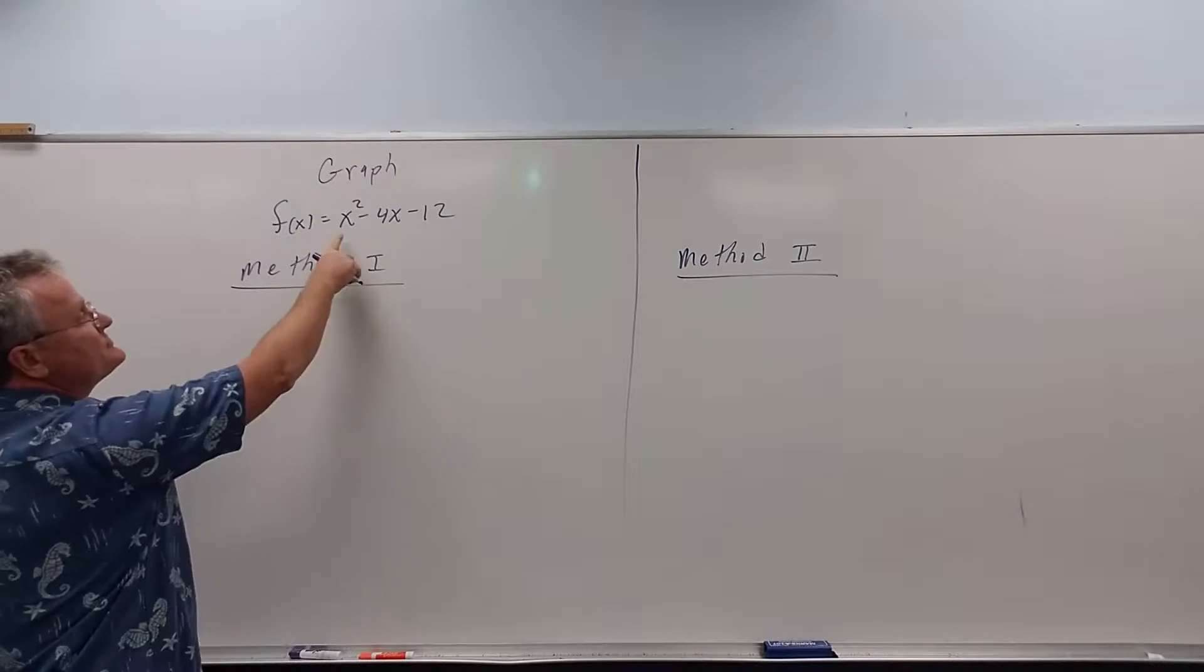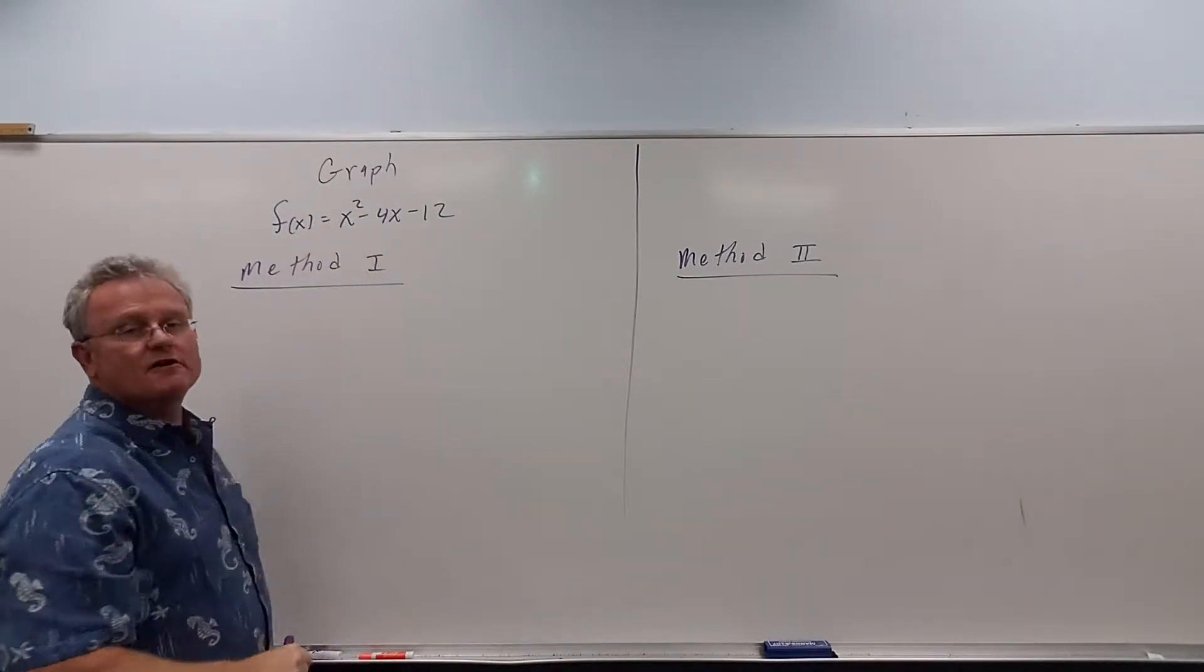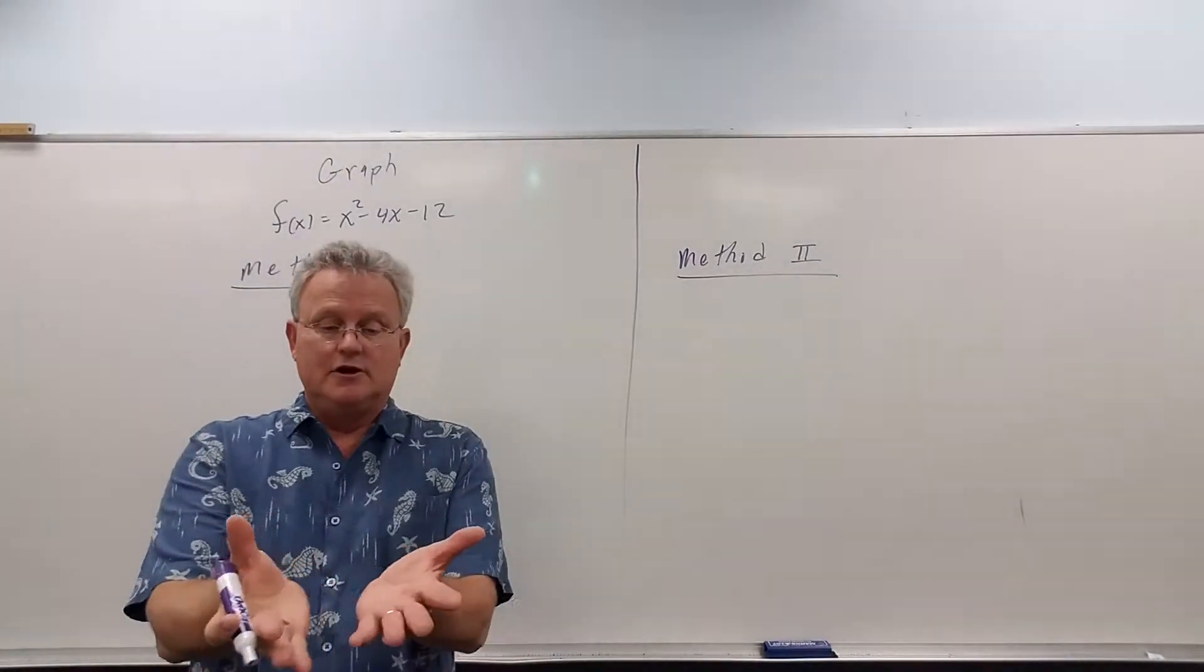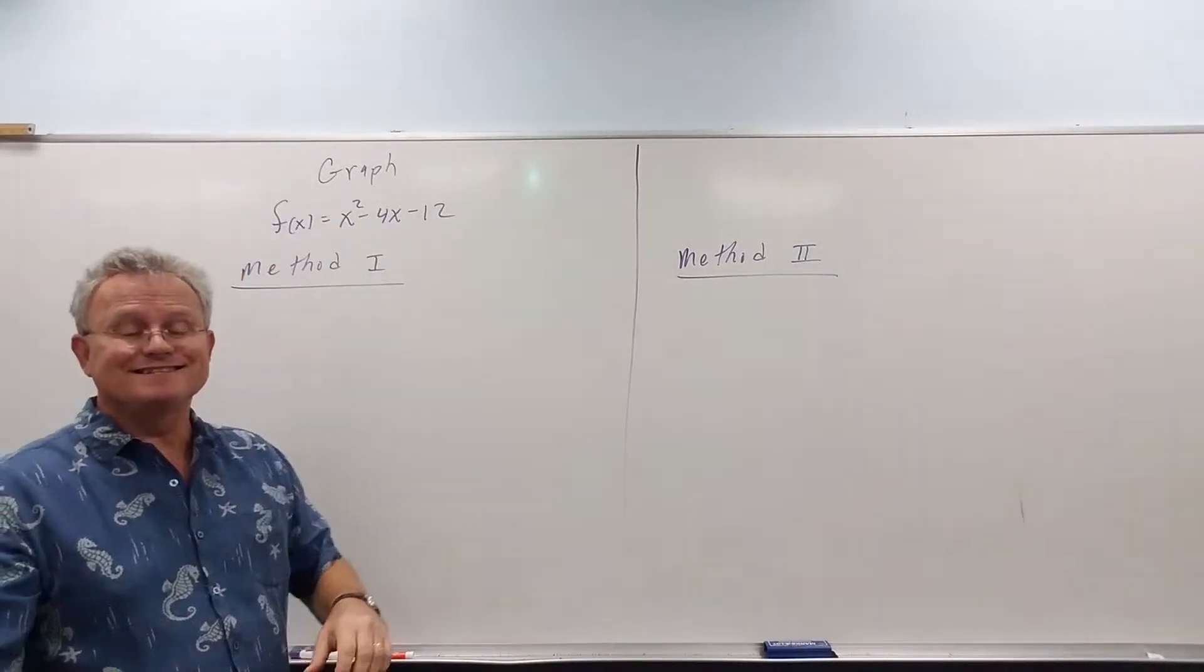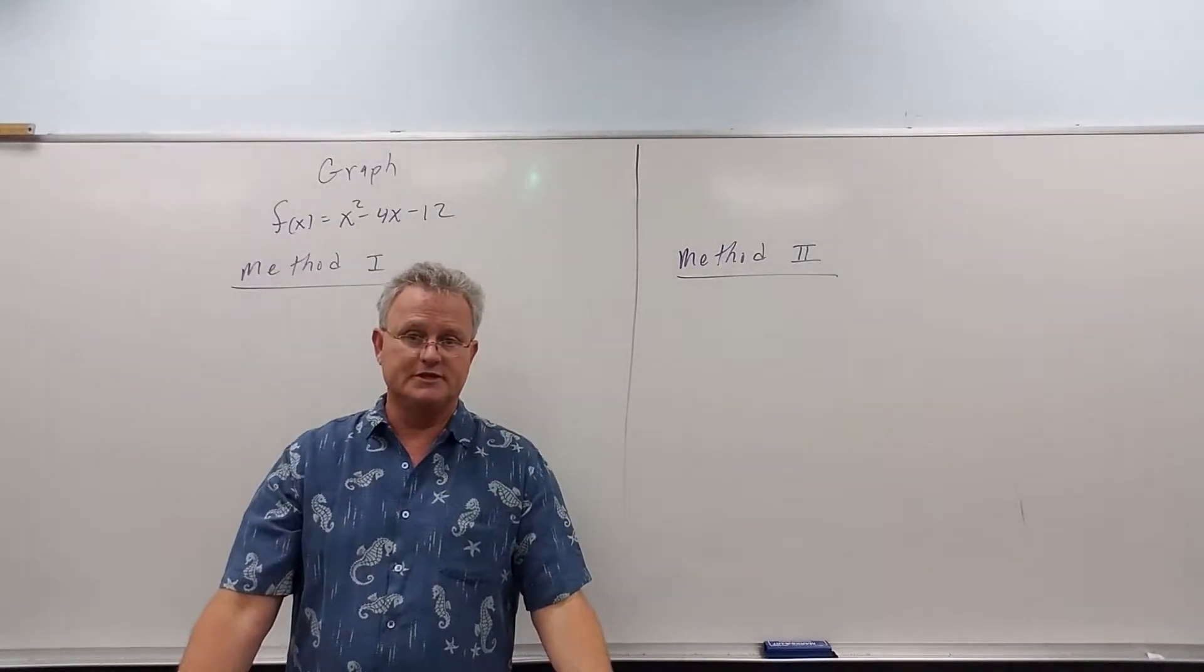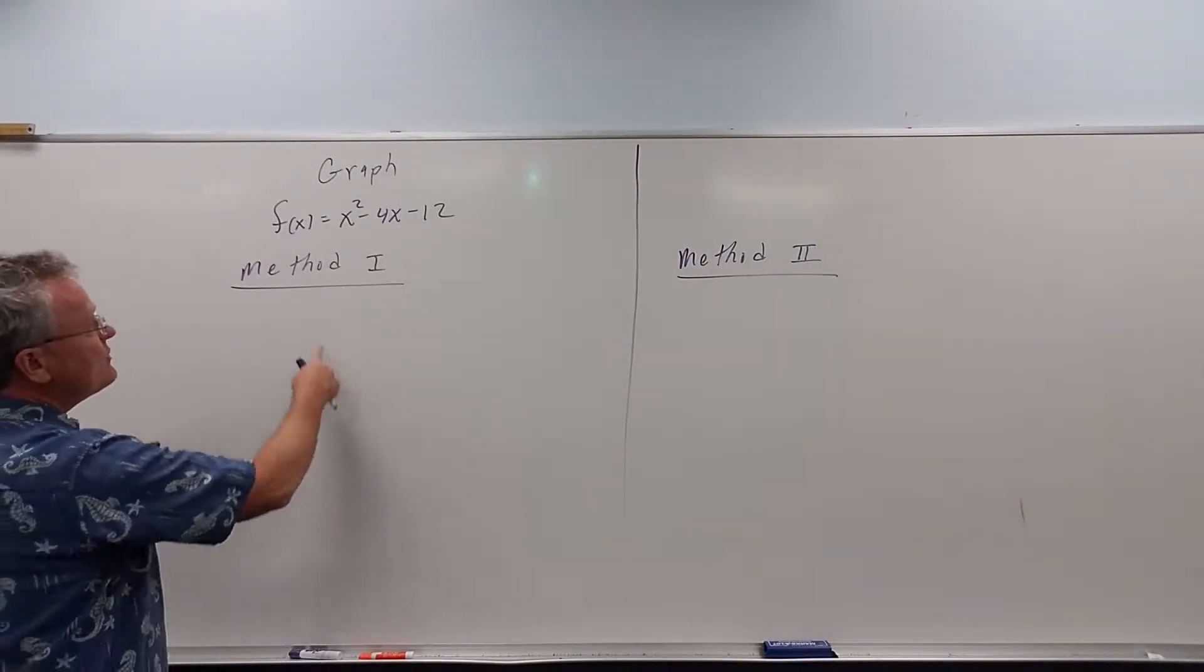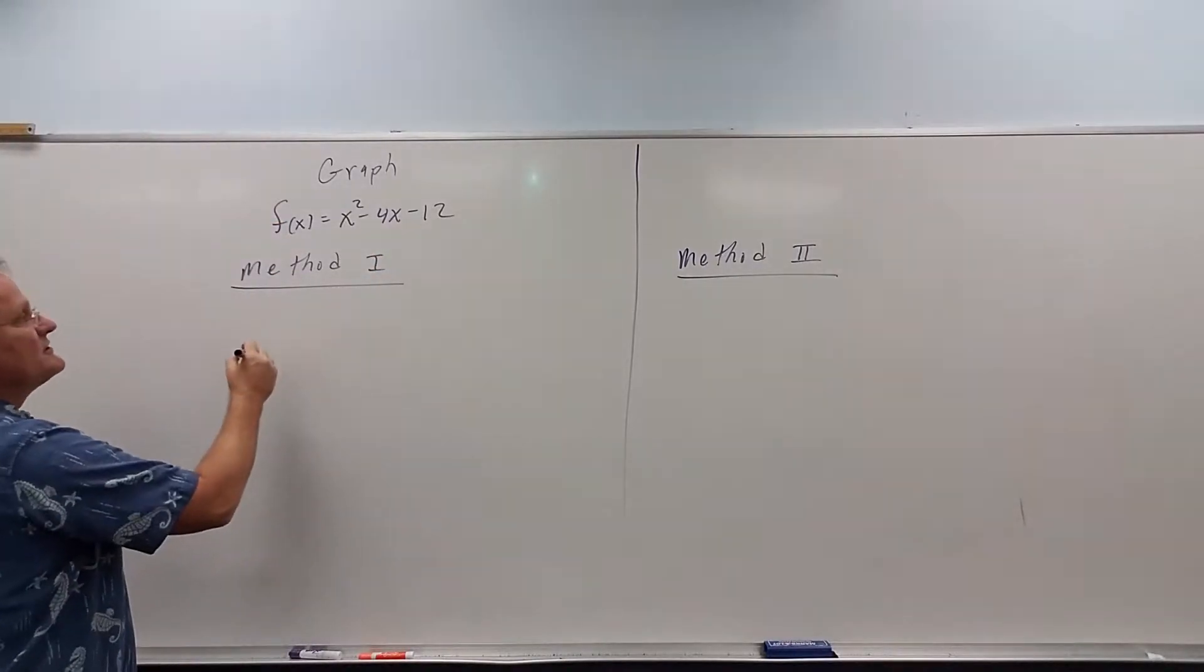One way is to do the following. First of all, if the number in front of x squared, the coefficient of x squared, is positive, your parabola opens up. If the number in front of x squared is negative, the parabola opens down. It's something you just want to be aware of. So we know this is going to open up. But what's its graph going to look like?